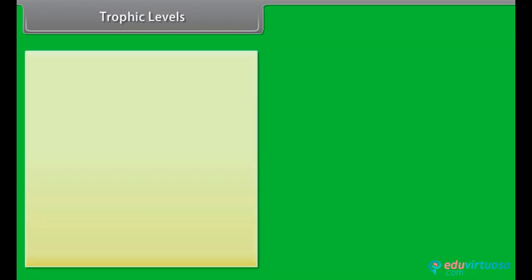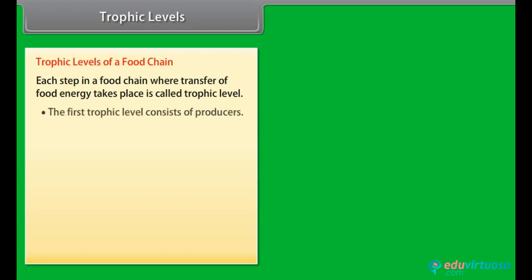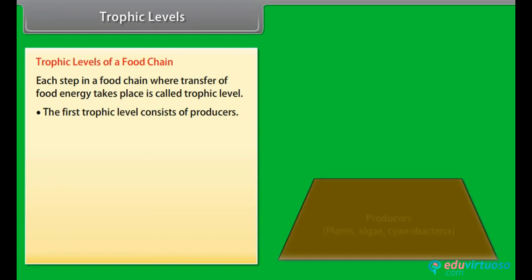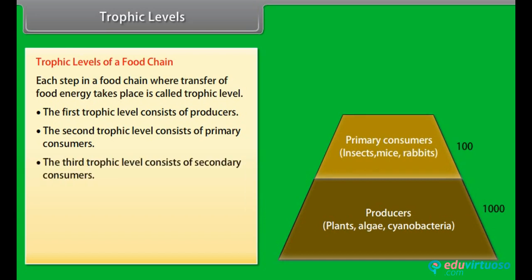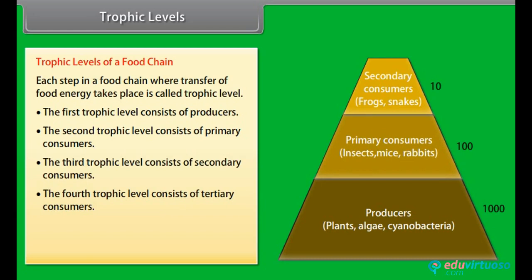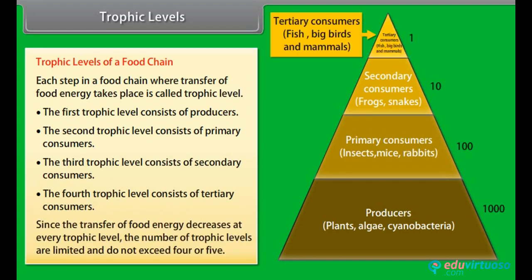Each step in a food chain where transfer of food energy takes place is called a trophic level. The first trophic level consists of producers, the second of primary consumers, the third of secondary consumers, and the fourth of tertiary consumers. Since the transfer of food energy decreases at every trophic level, the number of trophic levels is limited and does not exceed four or five.